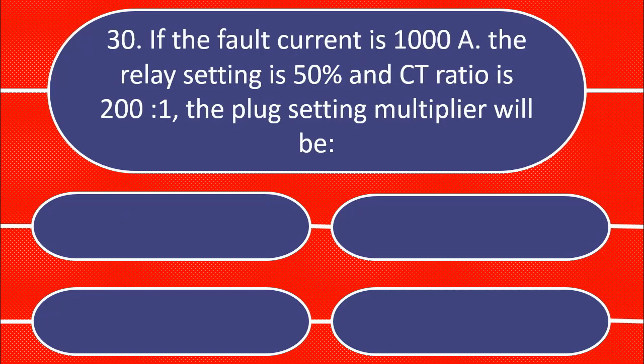If the fault current is 1000 Ampere, the relay setting is 50% and CT ratio is 200 is to 1, the plug setting multiplier will be.